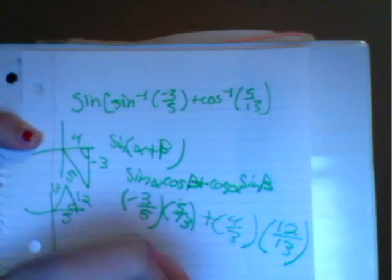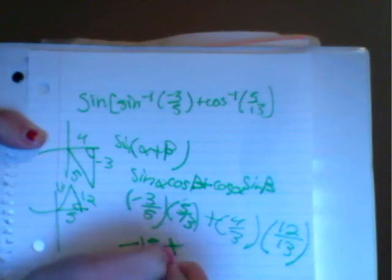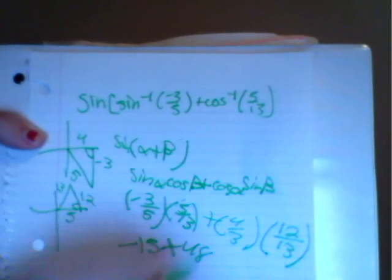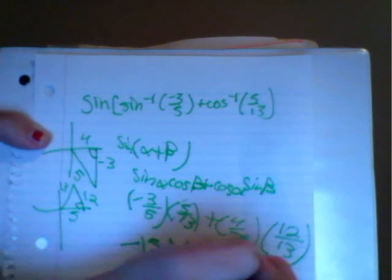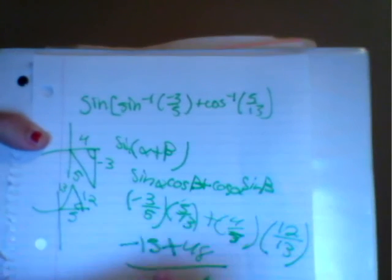So negative 3 times 5 is negative 15, plus 4 times 12 is 48, all over 5 times 13, which is 65.